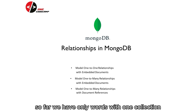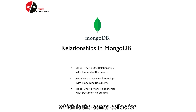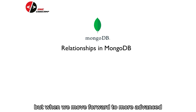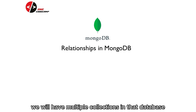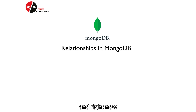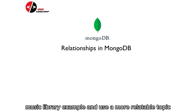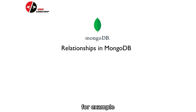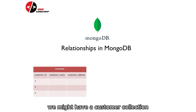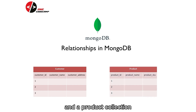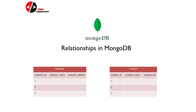So far, we have only worked with one collection, which is the songs collection in our music library database. But when we move forward to more advanced and larger scale projects, we will have multiple collections in that database. Right now, I would like to stray away from our music library example and use a more relatable topic. For example, we might have a database for an online shop. We might have a customer collection and a product collection, and these collections might have some relation to each other.